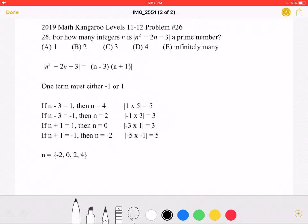To start, I factored this into (n - 3)(n + 1). Because we want this to be a prime number, one term must be either -1 or 1.